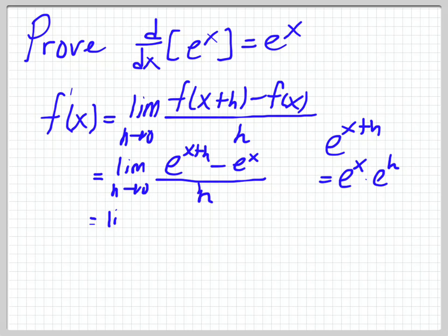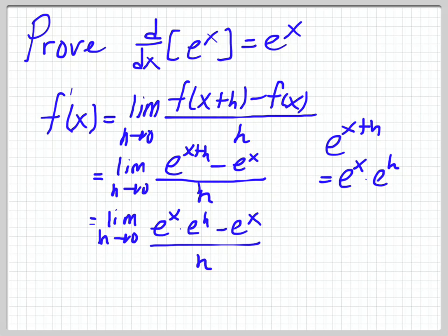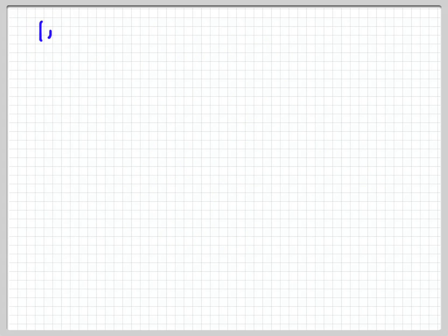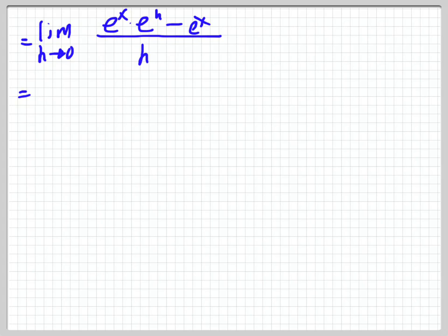So let's do that. Limit as h goes to 0 of e to the x times e to the h minus e to the x, all over h. I'm going to flick to the next page and rewrite that step. Limit as h goes to 0 of e to the x times e to the h minus 1, minus e to the x, all over h. I've broken off e to the x plus h into e to the x times e to the h, and now you can see I have a common factor in the top — e to the x — so I'm going to take out an e to the x. So the limit as h goes to 0 of e to the x, and I'm left with e to the h minus 1 all over h.